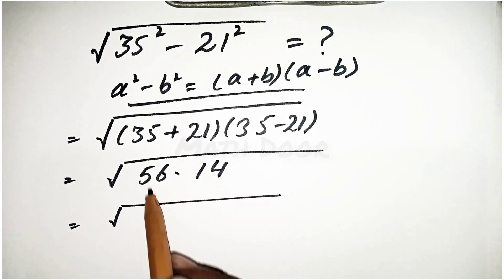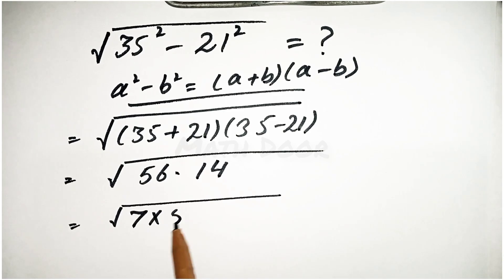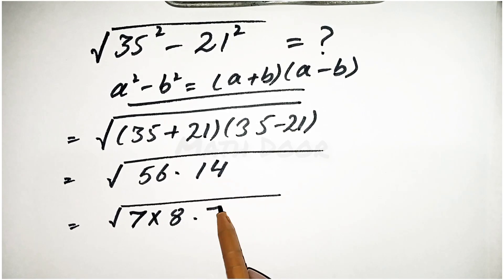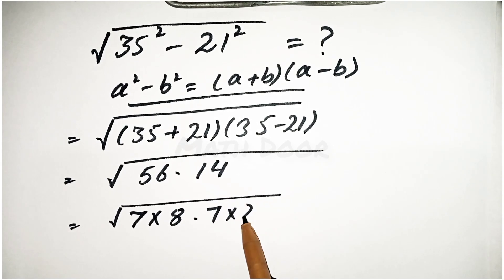Now we can write this as 7 × 8, and this one equals 7 × 2.